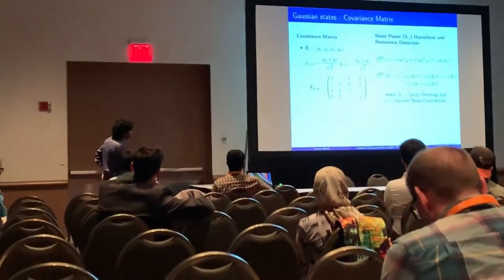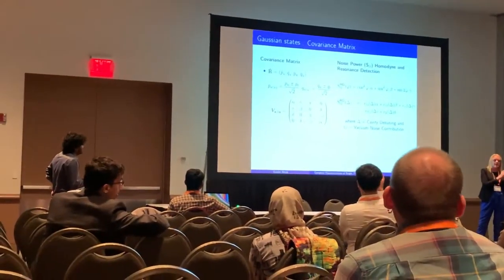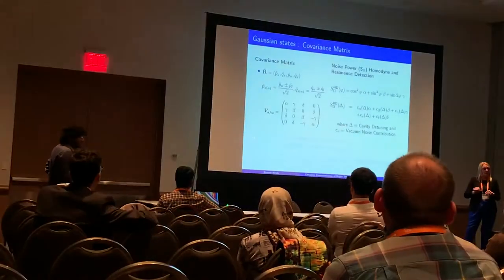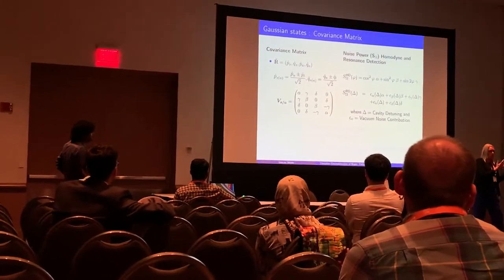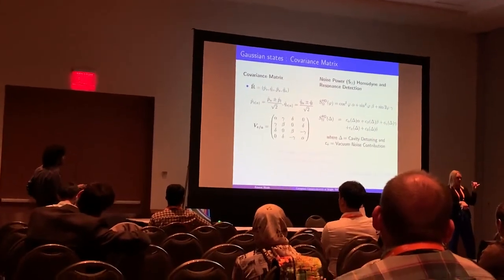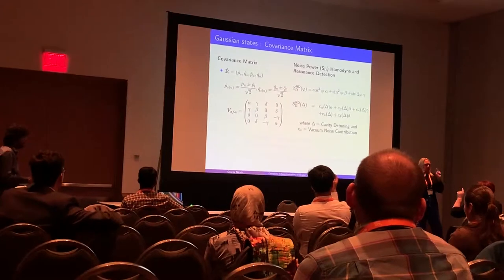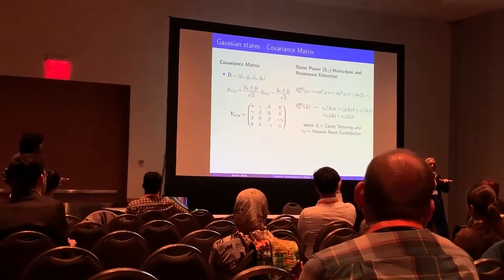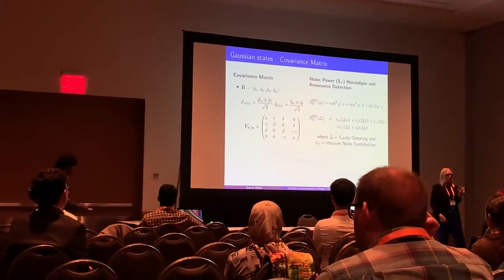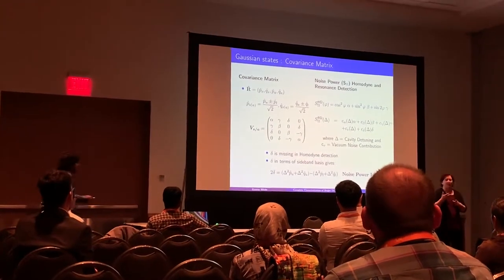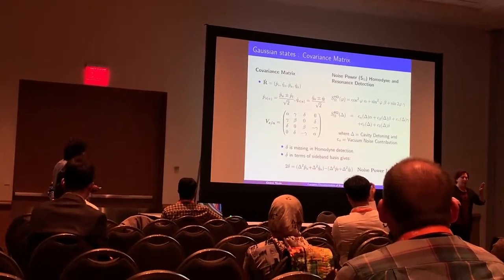To do complete characterization for a Gaussian state, you look at the covariance matrix — the second-order moments. This matrix has four parameters: alpha, beta, delta, and gamma. Alpha and beta are your amplitude and phase noise, gamma is the correlation between them, and delta is the parameter we want to focus on. Delta is essentially the correlation between the symmetric and antisymmetric basis components. In the case of homodyne, this parameter is assumed to be zero, so the noise power expression has only three parameters and the fourth is missing. In resonant detection using the cavity, all four parameters are present. Delta has a very nice interpretation: it is the noise power imbalance between the upper and lower sideband operators.